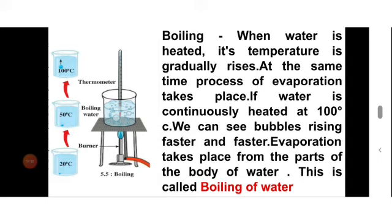Nowadays temperature guns are mostly found everywhere for checking body temperature. Now let's learn about boiling. Water evaporates continuously; water spilled on the floor dries up slowly on its own. When water kept on a stove attains a particular temperature or level of heat, evaporation takes place in all parts of the body of water. We can see bubbles rising faster to the surface and steam mixing in the air. This is called boiling of water. At sea level, pure water boils at 100 degrees Celsius. This is the boiling point of water.